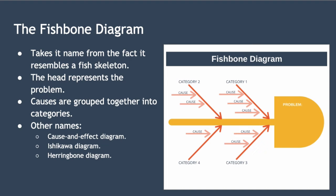A fishbone diagram takes its name from the fact it resembles the shape of a fish skeleton. The head of the fishbone diagram represents the problem you want to investigate. The backbone of the skeleton connects the spines, which represent the range of likely causes. And related causes are bundled together into categories.